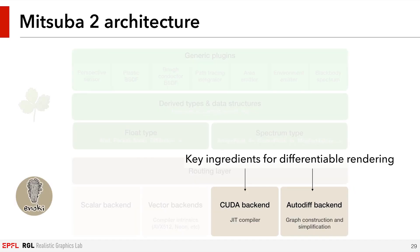After repeating this process several times, we hopefully converge to the desired parameters. This is essentially the same thing as training a neural network. But the big question is how to differentiate through a whole light transport simulation. To achieve this, Enoki offers two array types which we combine to obtain differentiable rendering on the GPU.